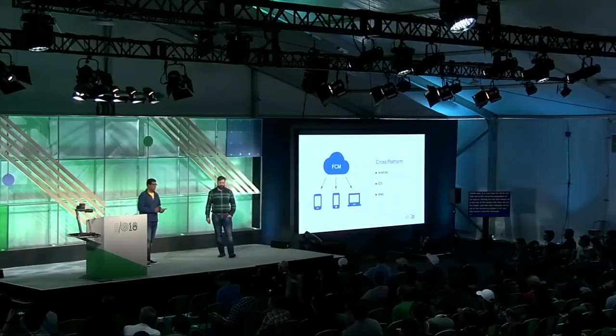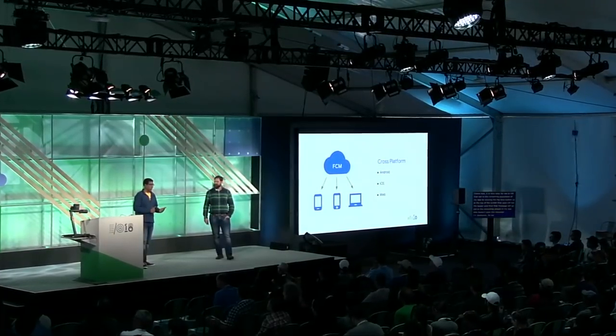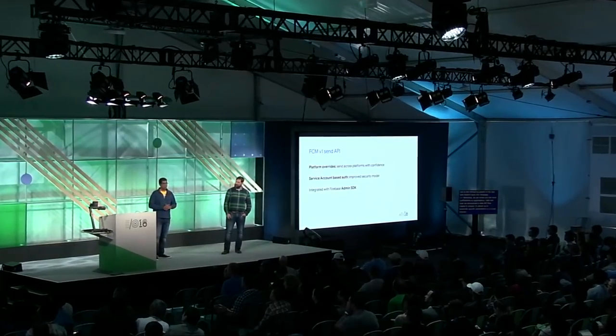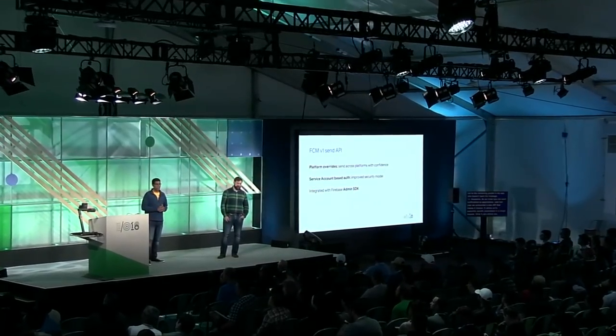FCM is a cross-platform service, so you can send notifications to Android, iOS, and web applications. Late last year, we announced a new API that makes this even simpler. This API allows you to override platform-specific parameters in a single request. It also allows service account-based authentication — if you use any other Google API, you're probably familiar with it. It gives you short-lived tokens to authenticate with our service. It's also integrated with Firebase Admin SDK, which already includes convenience methods for authentication and sending messages using this API. There's a deep dive talk on Admin SDK later today where they'll demo some FCM things.